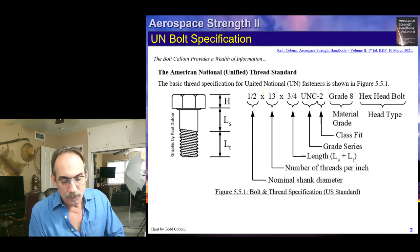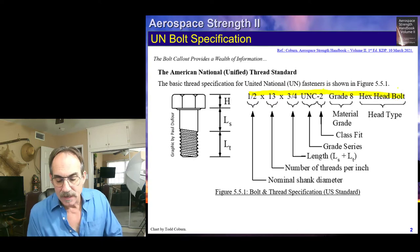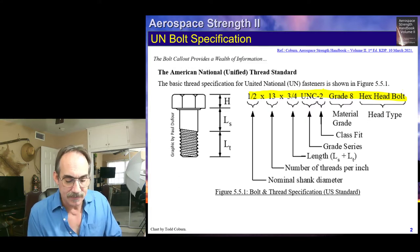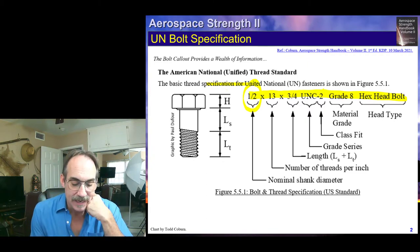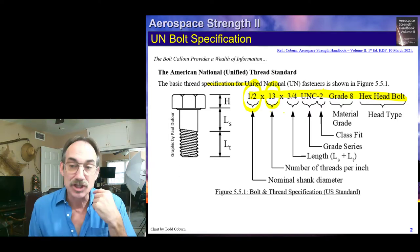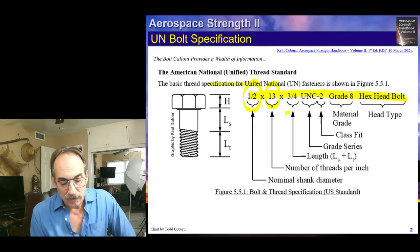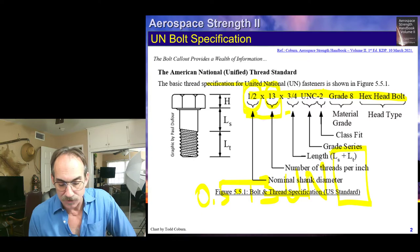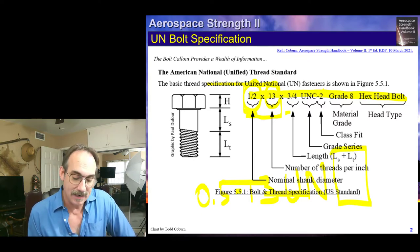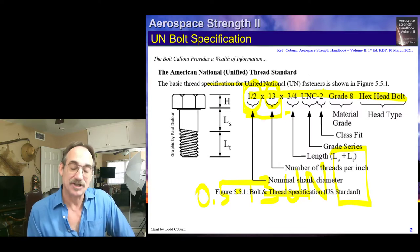So if we take a look right here, we see a typical bolt call-out. Now we might see all of this information, or just some of it. The first thing we're always going to see is the bolt diameter — this is a half-inch bolt, which is the nominal shank diameter. The next thing you'll see is the threads per inch. This bolt has 13 threads per inch. That call-out, one-half dash 13, or written 0.5 dash 13, is the United National standard.